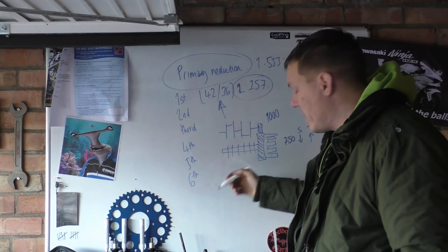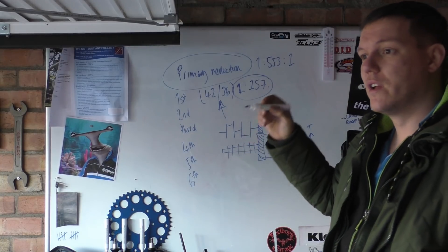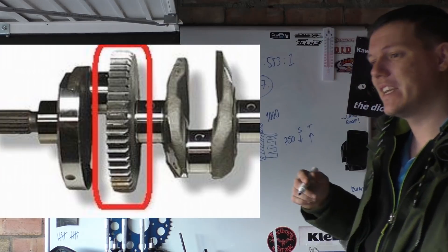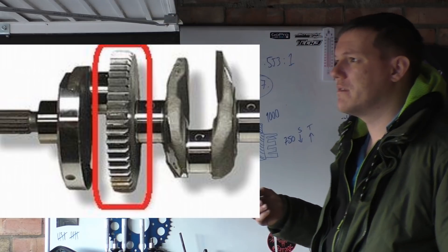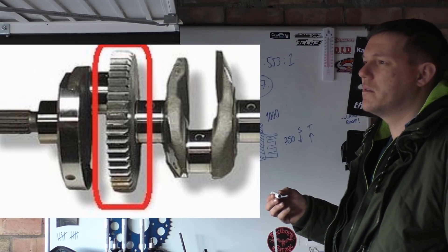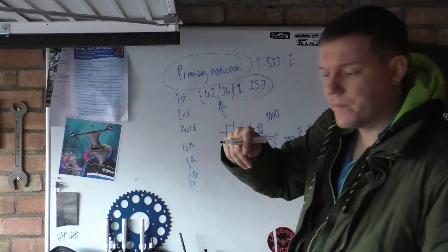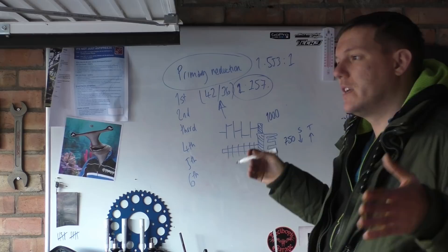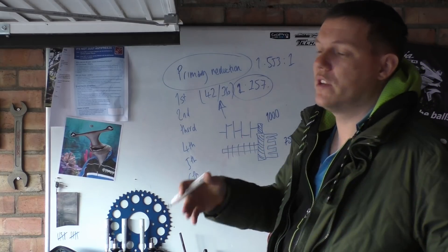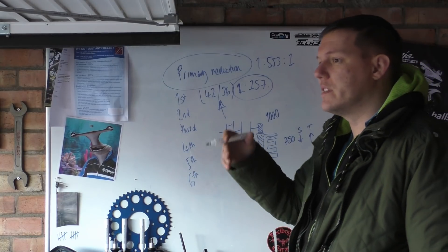So what they'll do is, I'll show you a picture instead of trying to draw it. One of the crank webs actually has the gear on it. A lot of bikes have this. I think bandits have this as well if I can remember off the top of my head. I think they do. So one of the webs is the actual gear. This is just so you can keep your crankshaft a bit shorter. And this is so you're also saving weight.